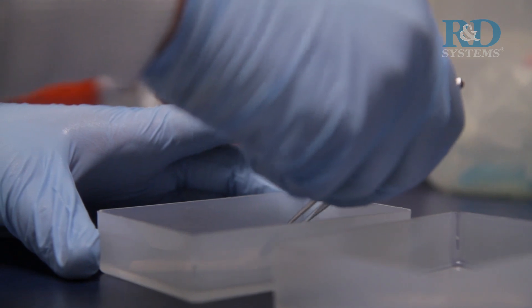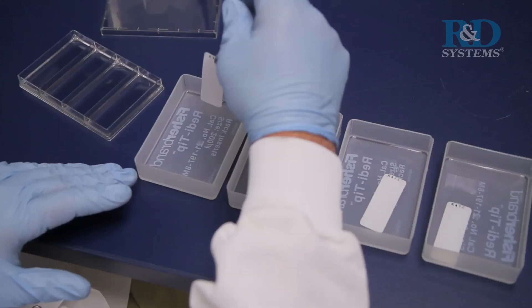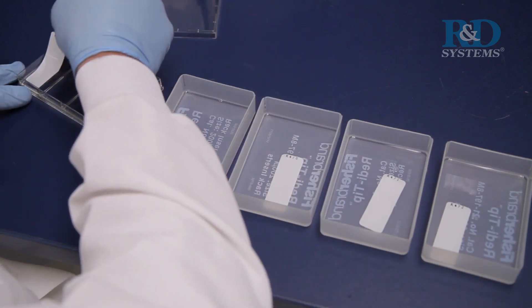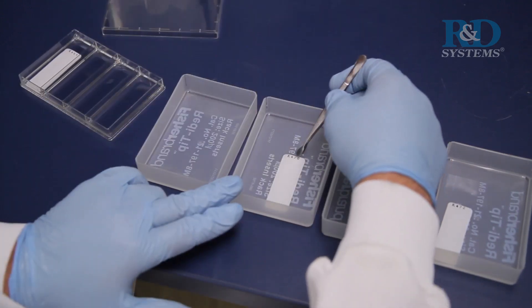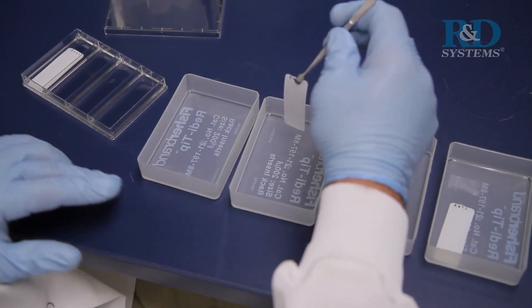Then, carefully remove each membrane from its wash container. Allow excess buffer to drain from the membrane and return the membrane to the 4-well multi-dish containing the diluted antiphosphotyrosine HRP.